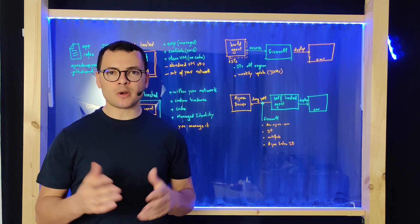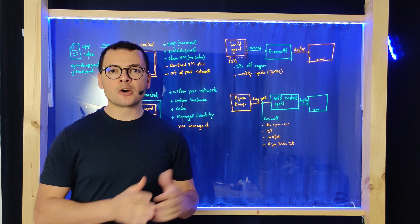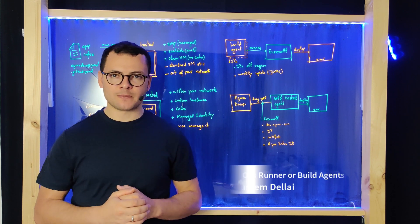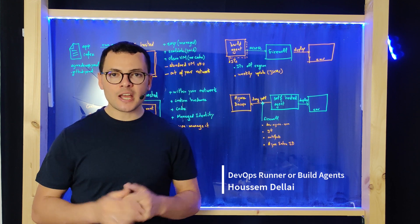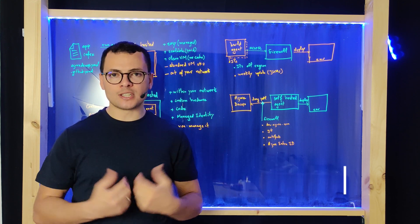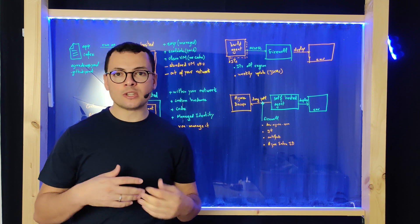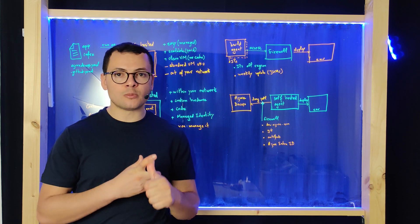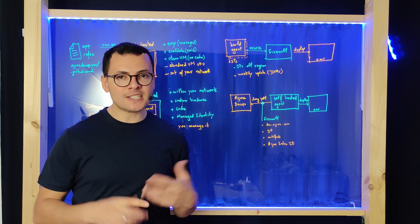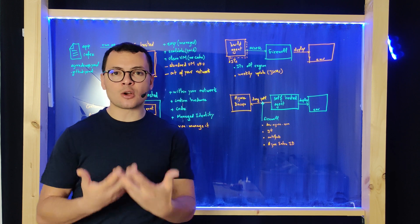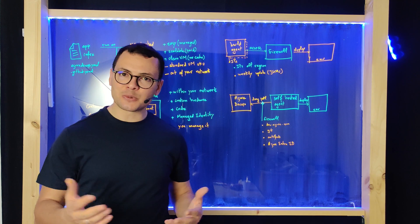In this session, we'll learn about the different options for deploying a build agent within Azure DevOps or a runner in GitHub Actions. We'll start by exploring the Microsoft hosted agents, and then we'll explore the self-hosted agent that you can run within your own infrastructure and network — using an on-prem virtual machine, an Azure virtual machine, Azure virtual machine scale set, or as a container within Azure Container Apps or an AKS cluster.